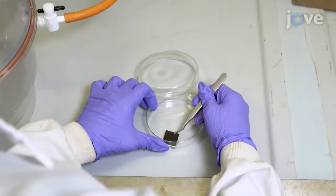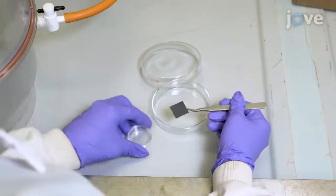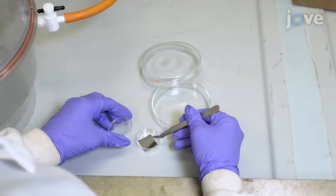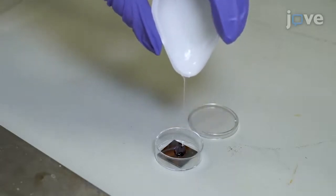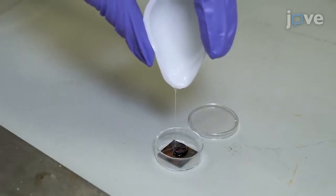Then, place the silicon master for the PPL array in a four centimeter petri dish. Pour the degassed PDMS pre-polymer mix over the master until it is fully covered.